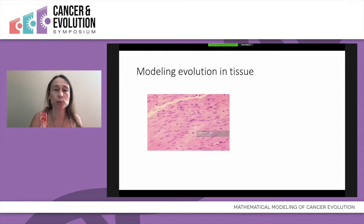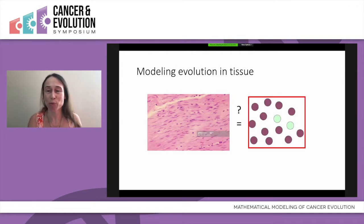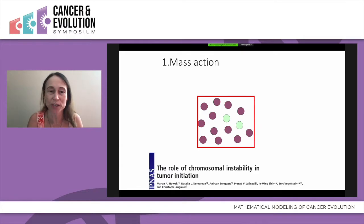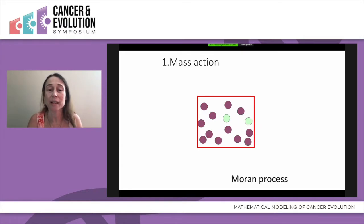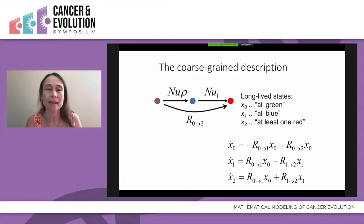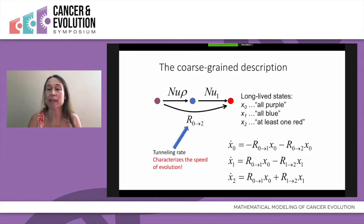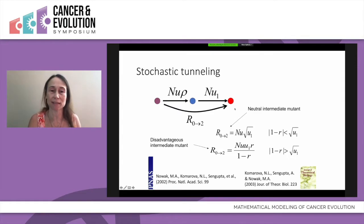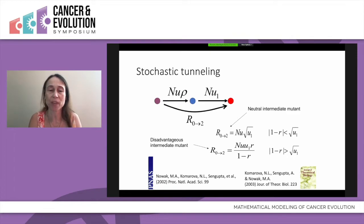How do we model evolutionary processes in tissue? We simplify to different degrees. The simplest process is a bunch of cells in a box — you kill one, divide one, and watch the spread of the mutant. In this process, there is a mathematical way to characterize the speed of evolution. You can calculate how quickly to expect the creation of the super mutant — for example, the inactivation of both copies of a tumor suppressor gene — based on population size and mutation rate.